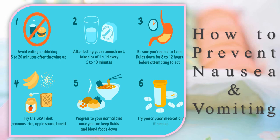Prevention of nausea and vomiting: avoid eating or drinking for 5 to 20 minutes after vomiting — give rest to your stomach. After resting the stomach, take sips of liquid every 5 to 10 minutes. Be sure you can keep fluids down for 8 to 12 hours before attempting to eat. Follow the BRAT diet — B for banana, R for rice, A for apple, T for toast. Progress to your normal diet once you can keep fluids and bland food down. Try prescription medication if needed.